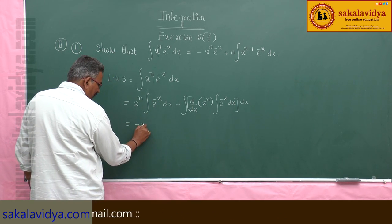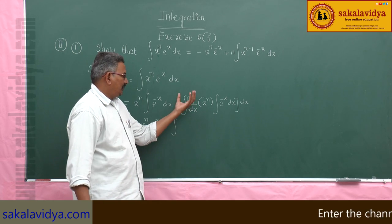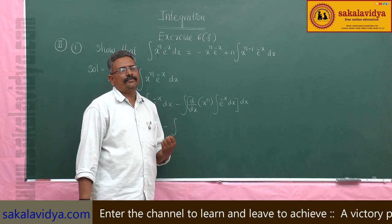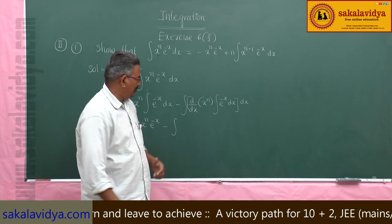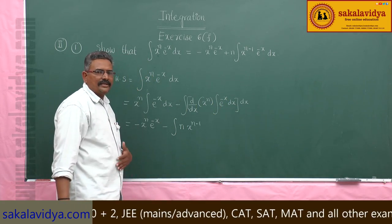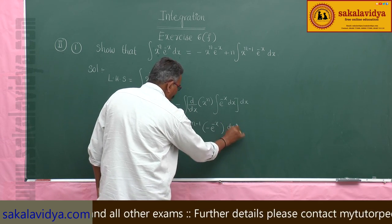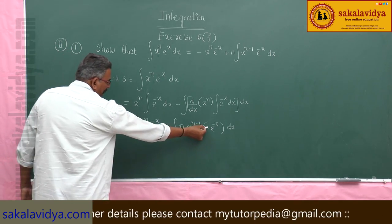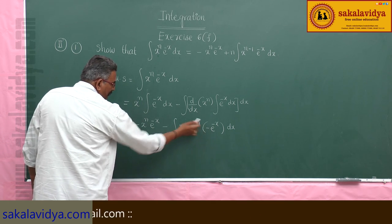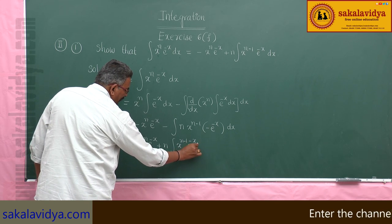So we can write this as minus x to the power of n, e to the power of minus x, minus the integral. Now, the derivative of x to the power of n is n times x to the power of n minus 1. So we have n times x to the power of n minus 1, whereas the integral of e to the power of minus x dx is minus e to the power of minus x. Taking minus n common, this becomes: minus x to the power of n e to the power of minus x, and minus times minus gives plus n, times the integral of x to the power of n minus 1, e to the power of minus x dx.